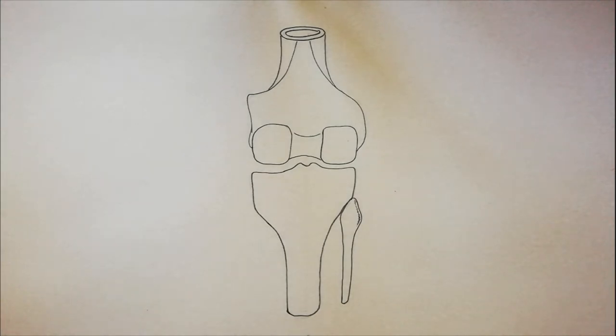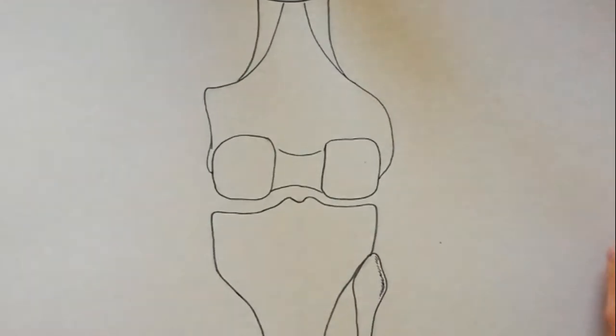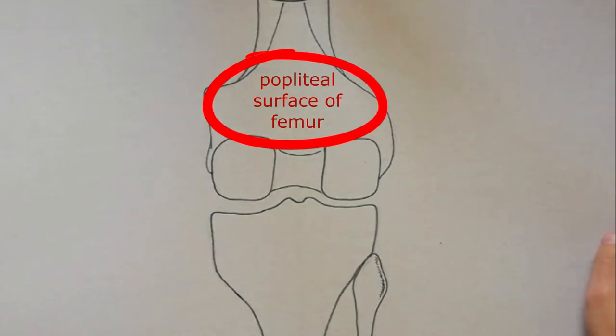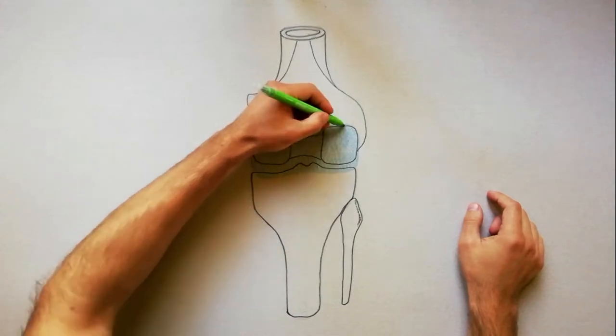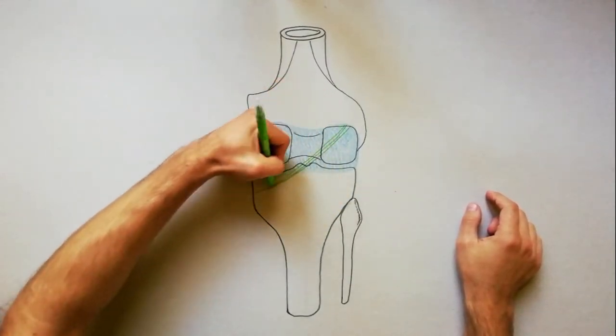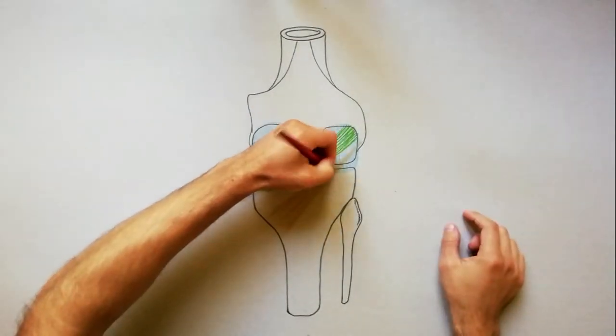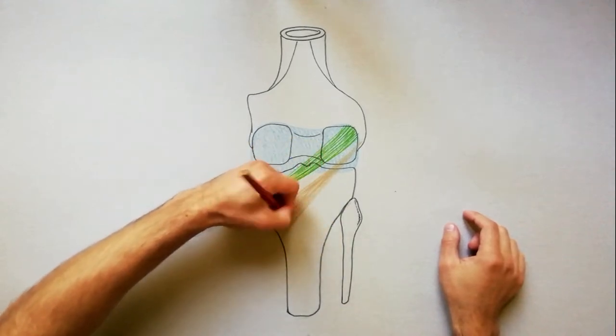The floor of the popliteal fossa is formed by the popliteal surface of the femur, the capsule of the knee joint and the oblique popliteal ligament, and strong fascia covering the popliteus muscle.